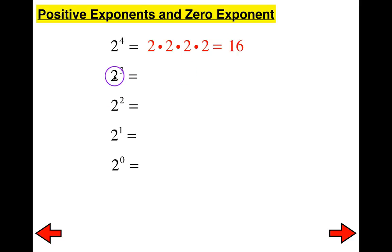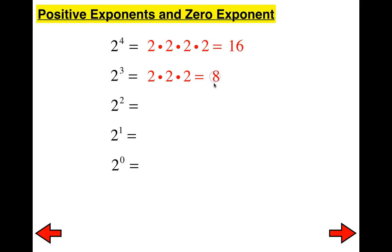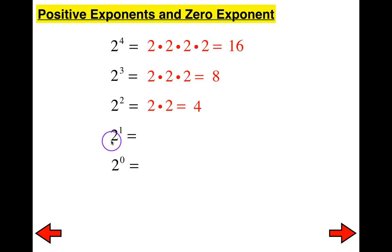Here, the base is two and the exponent is three, so two is going to be repeated three times, which gives me eight. In this case, two is repeated two times — two times two — which is four. And two to the first power means two is only repeated once, which is two.